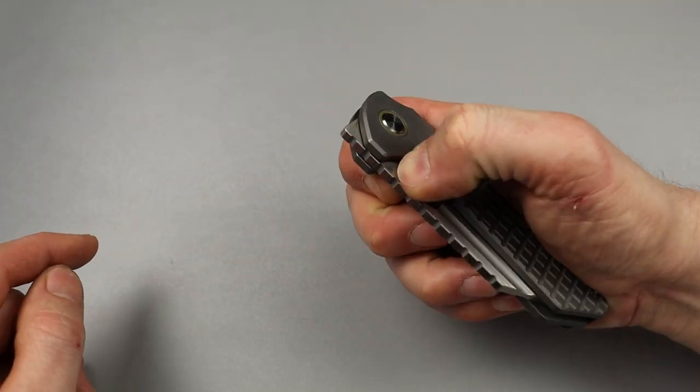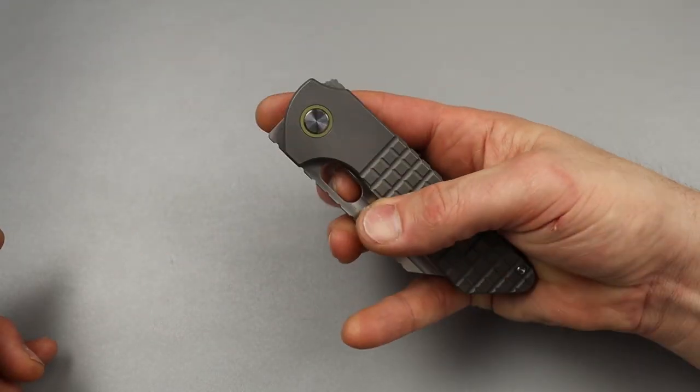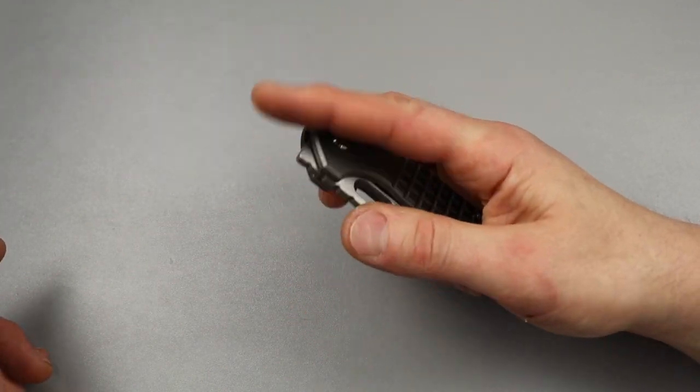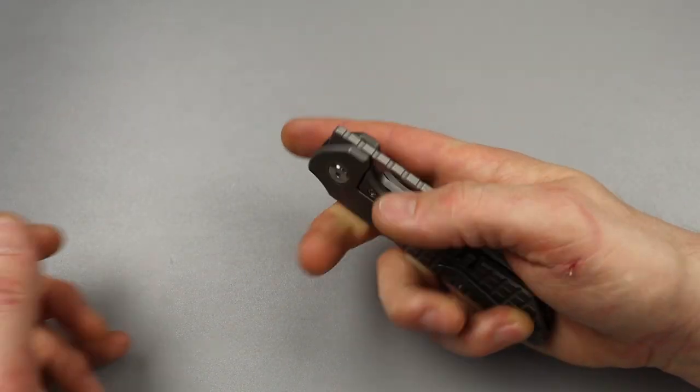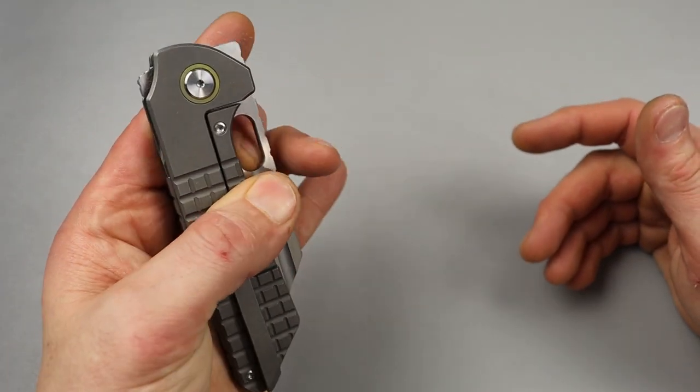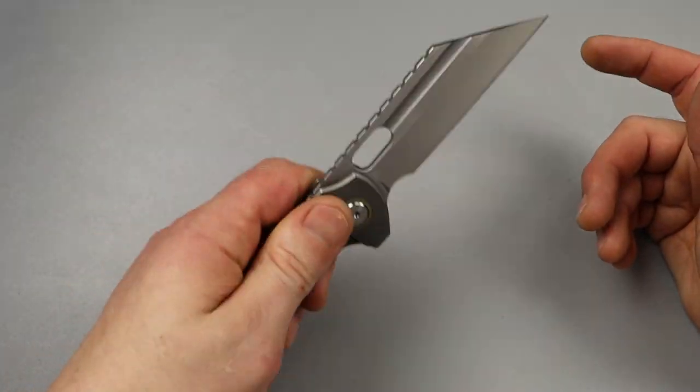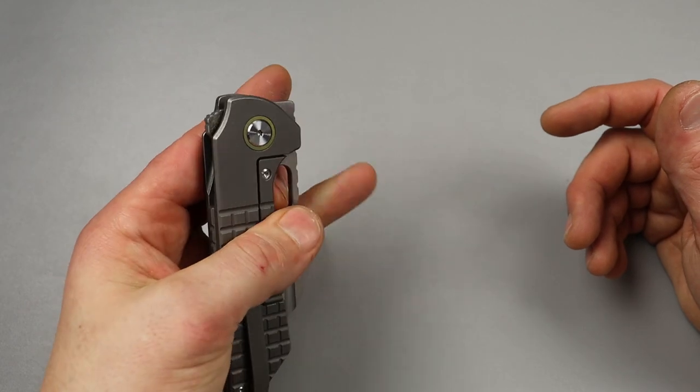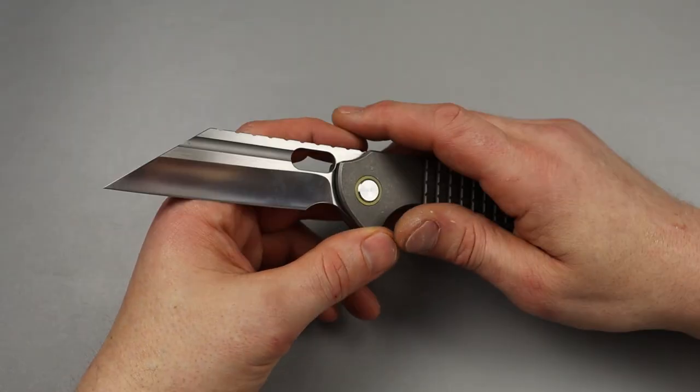Then you have the hole deployment that you can thumb flick or reverse flick. The detent is well tuned for the reverse flick, even with the left hand. With pressure on the lock bar, I can still reverse flick it. This is definitely good, both right and left handed.